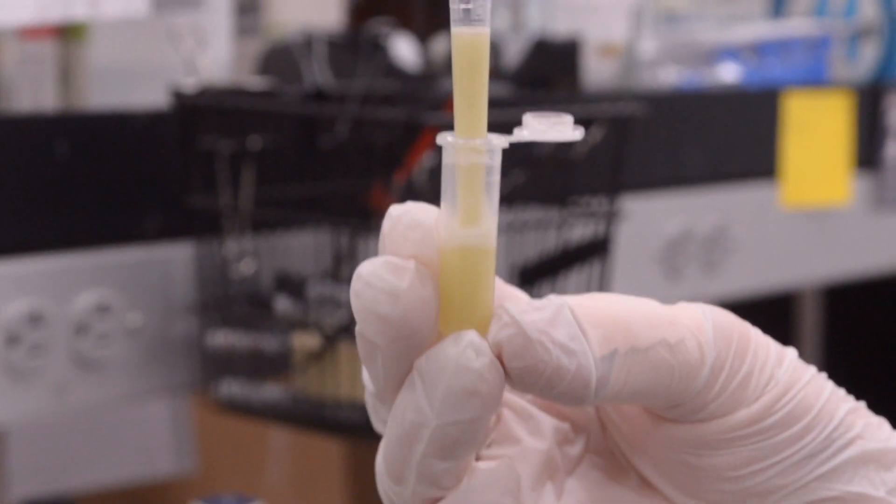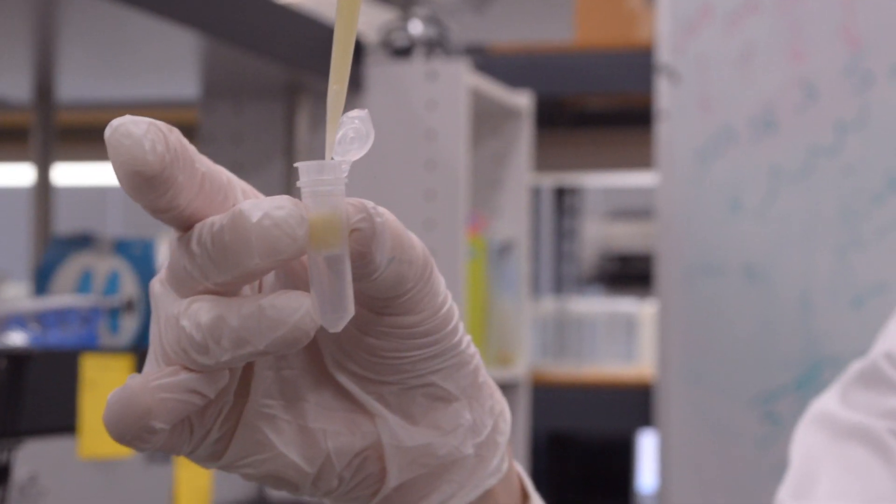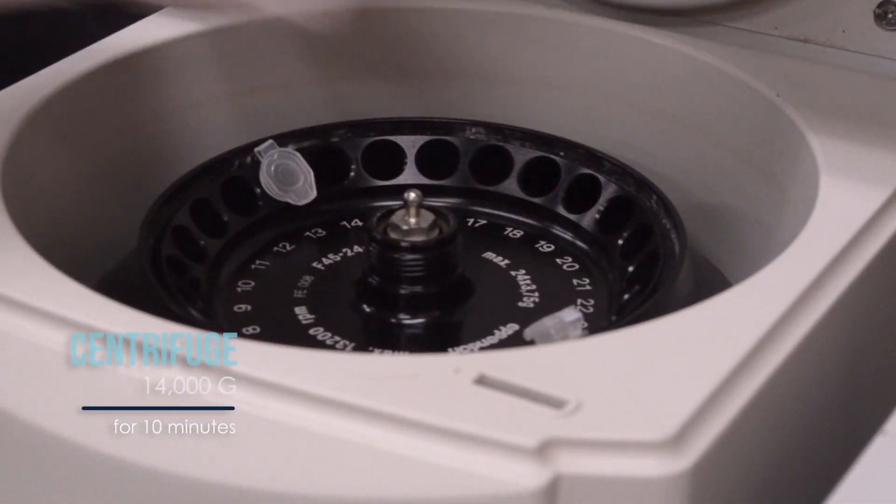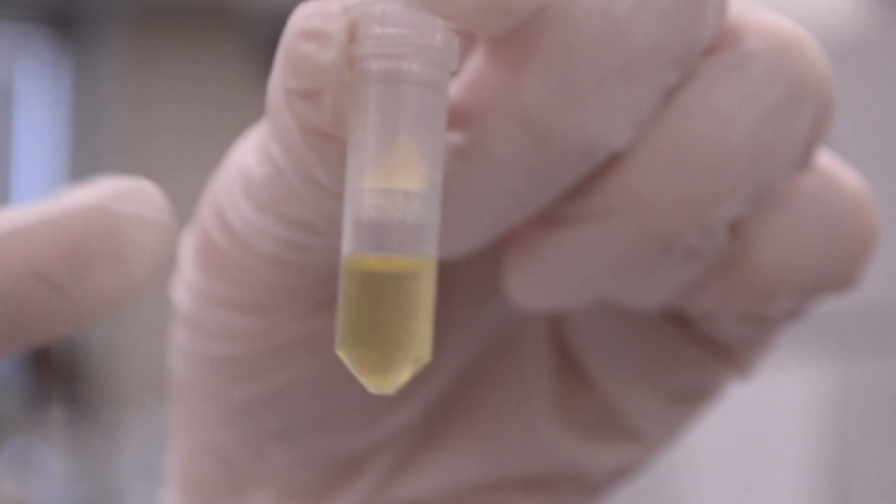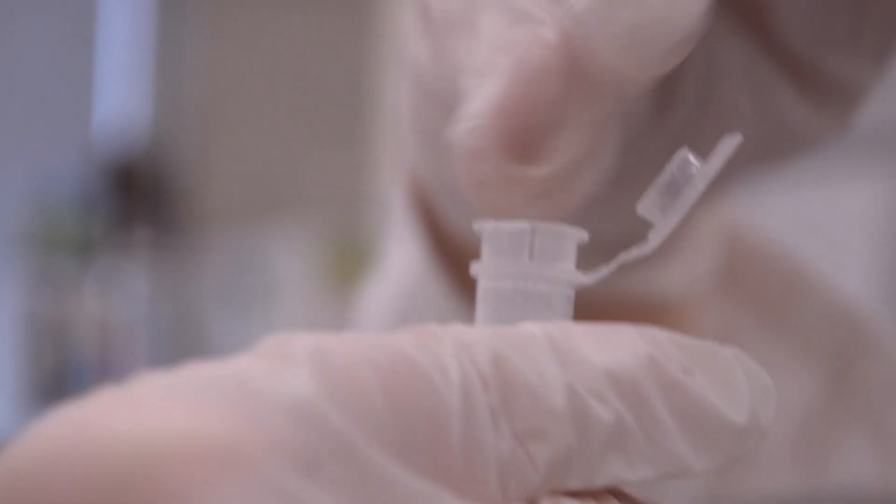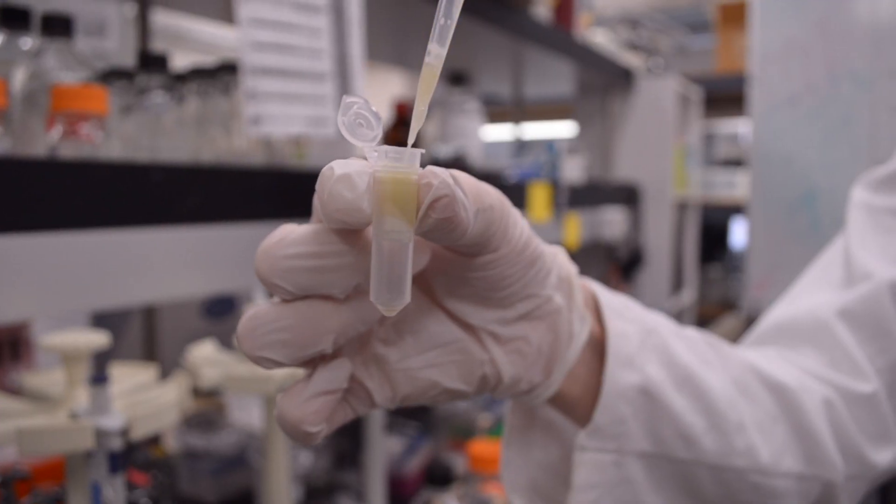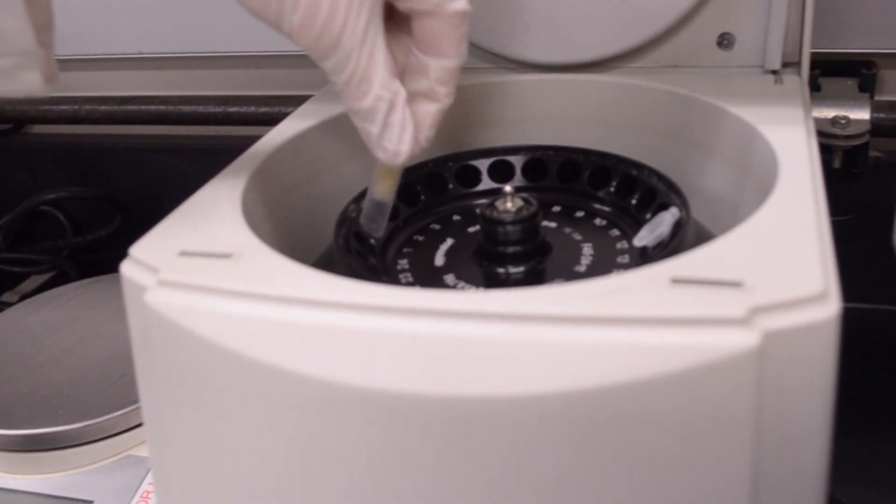Mix the solution and transfer about half of it to a spin filter tube and centrifuge at 14,000 g for 10 minutes. Empty the catch tube, add the rest of the solution to the filter and centrifuge again.